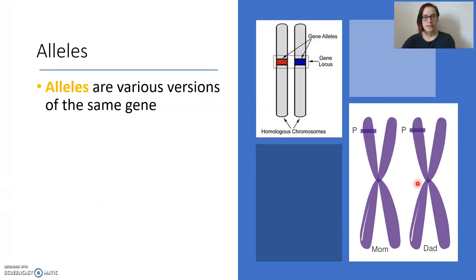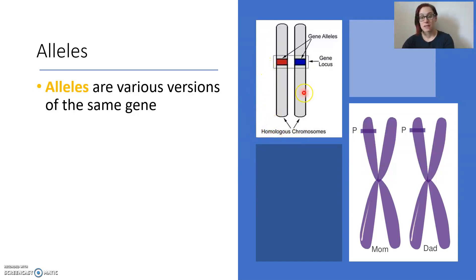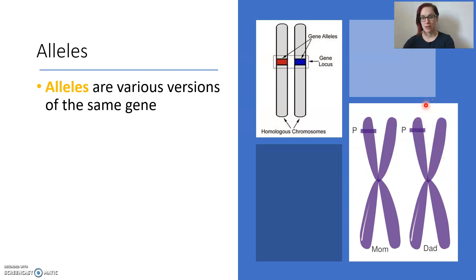We're going to discuss alleles, and alleles are various versions of the same gene. You might have matching chromosomes — called homologous chromosomes. So maybe this is chromosome 4, and this one is also chromosome 4. Remember, they come in pairs. We're talking about the same region on each of those chromosomes, but they are different versions. You get one chromosome from mum and one from dad — that's how you inherit them. They are pairs with the same coding regions.